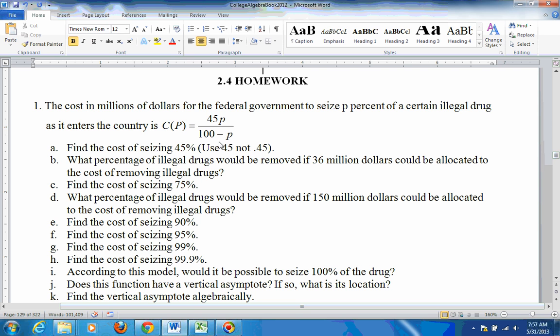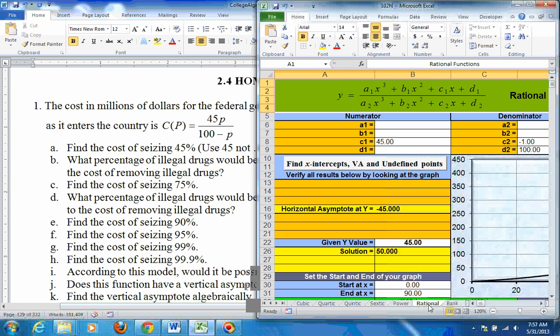This function right here is called a rational function because there's a variable in the denominator. You can do these on the Excel sheet by using the rational sheet. This can handle up to a cubic over a cubic. So put in your coefficients for the numerator, which only has a linear coefficient of 45, and the linear coefficient is your C1. So put that in for C1, 45. And then your denominator, your C2, the linear coefficient on the bottom, is negative 1 because this is minus 1P. So your C2 is negative 1, and your constant at the end is 100.